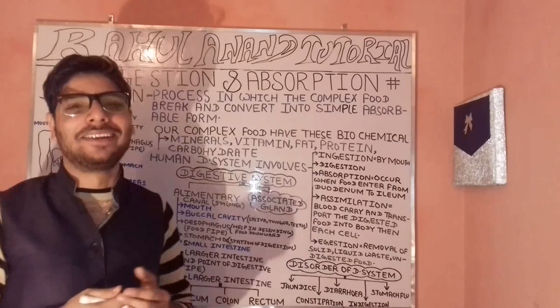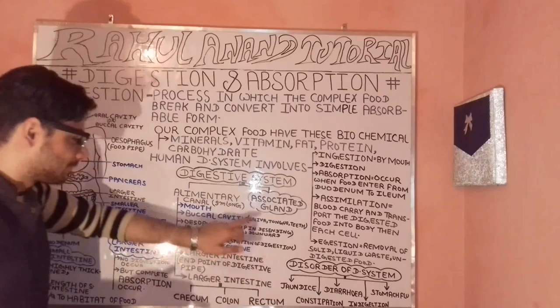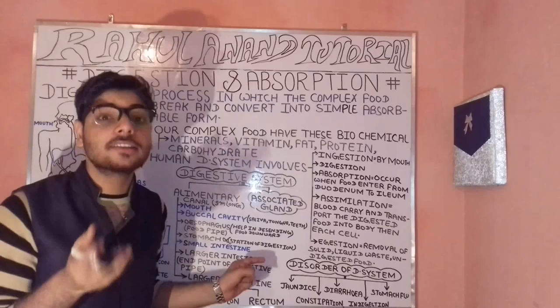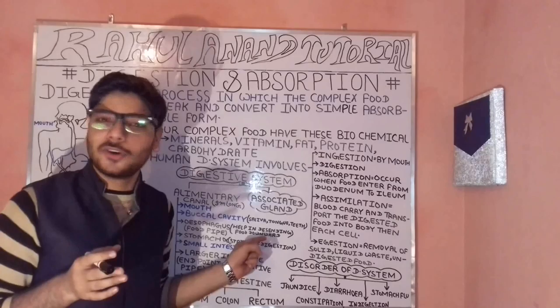Let's understand the alimentary canal. It is approximately 9 metres in length. Its parts are: mouth, buccal cavity, oesophagus, the J-shaped structure (stomach), smaller intestine, and larger intestine.